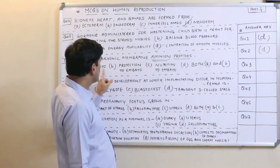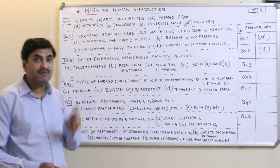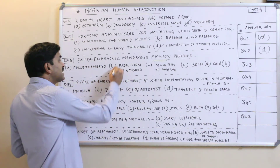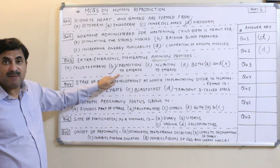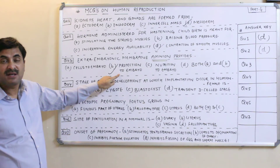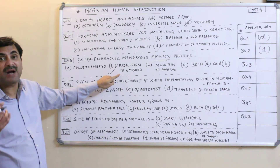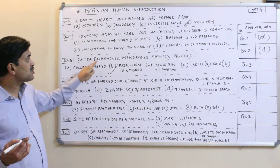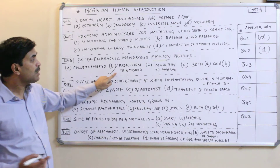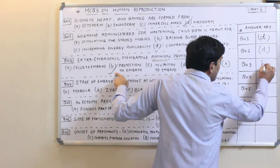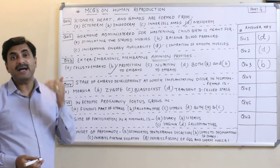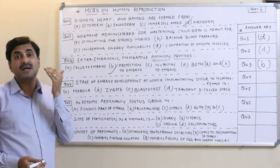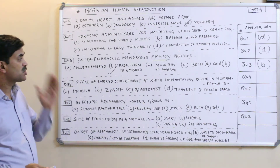Always remember that amnion is concerned with the protection of the embryo. It prevents the embryo from mechanical shocks and also prevents the embryo from desiccation — that is, from drying out. So extra-embryonic membrane amnion provides protection by preventing desiccation and mechanical shocks.